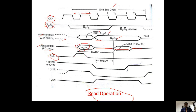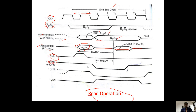For a read operation, we can select either memory read or IO read. If the processor performs a memory read operation, the MRDC bar (memory read command bar) must be low during T2 to T4. Remember these are bar signals, so they must be low to be active. For IO read operation, the IORC bar must be low during T2 to T4.